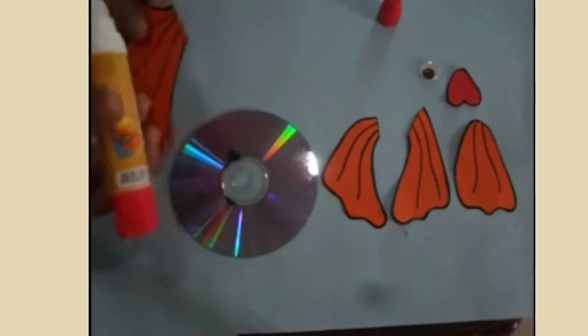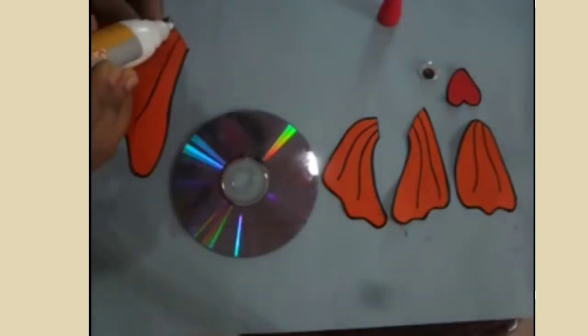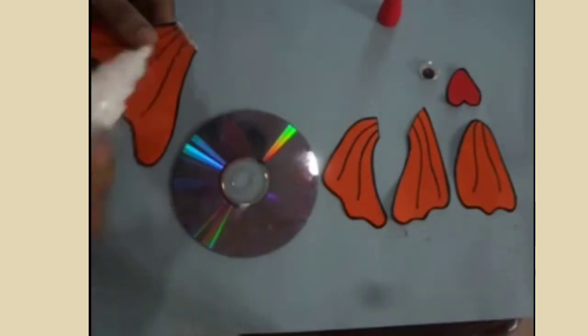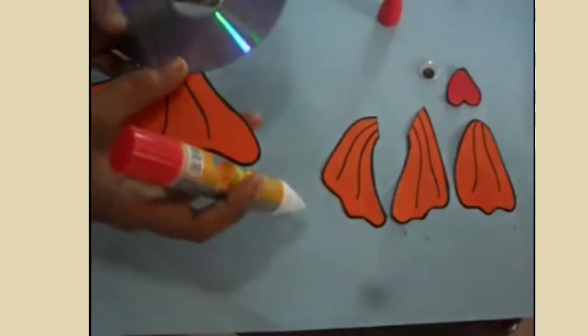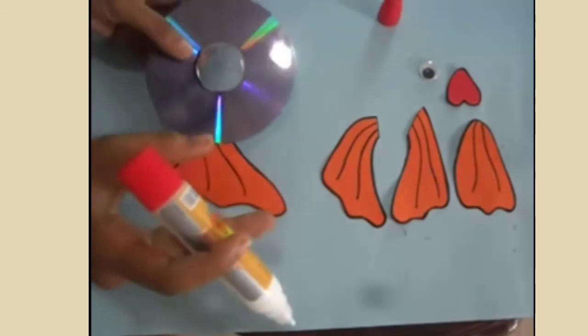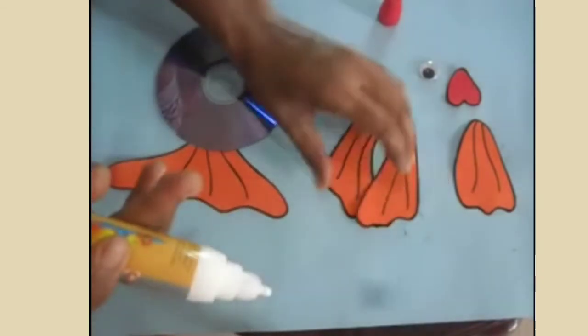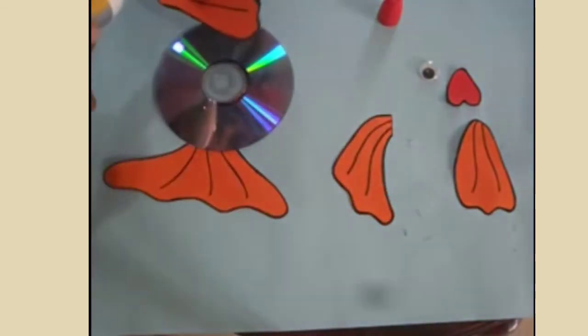Now with the help of the glue, you can apply some glue on one edge of the tail and apply it on the back of the CD. The CD is round in shape, so you can apply the tail anywhere. Once you have applied the tail...